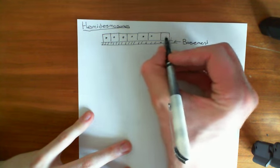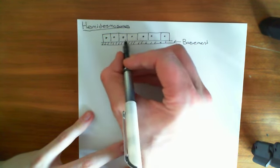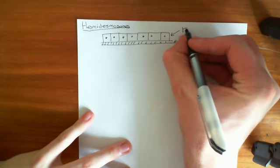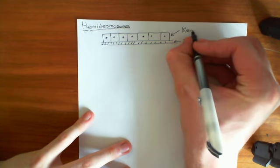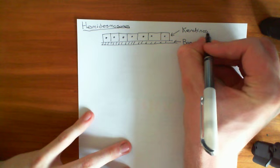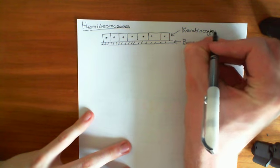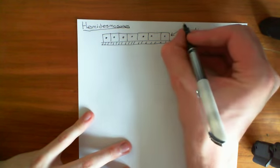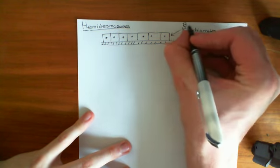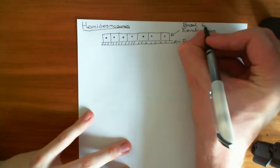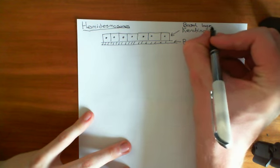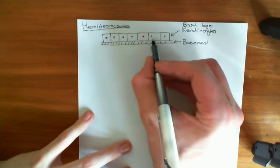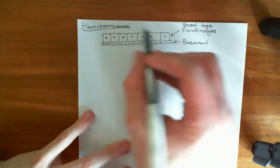What we're going to discuss is how these basal cell keratinocytes — keratinocyte is just the name for an epidermal cell — and these are in the basal cell layer, so you might call them basal layer keratinocytes. What we're going to discuss is how these basal layer keratinocytes are attached to this basement membrane.